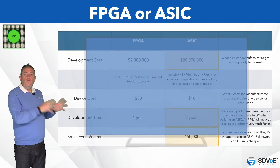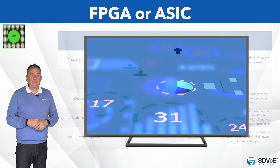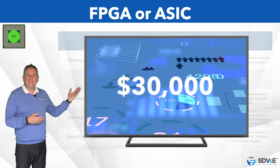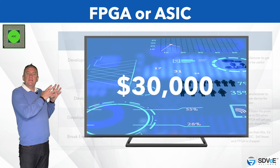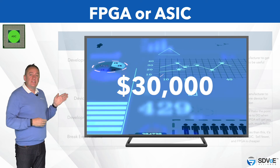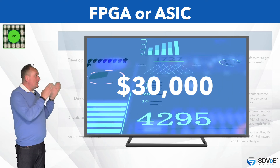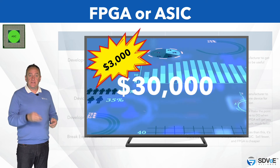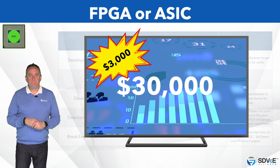Remember when 4K TVs were first introduced to the market and they ran up to upwards of $30,000 each? That's because they all had FPGA chips. And now the same 4K TV is a tenth of that price because it uses, you guessed it, the ASIC chip instead.